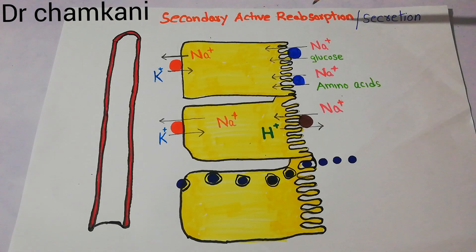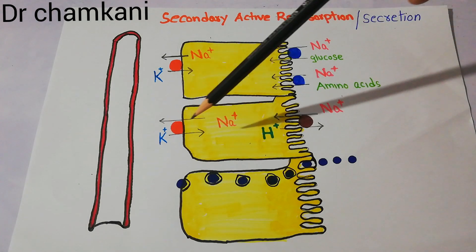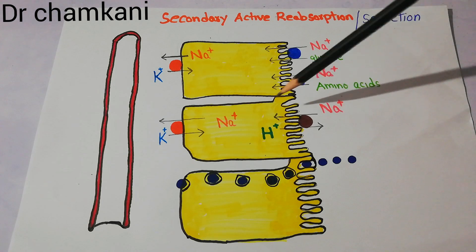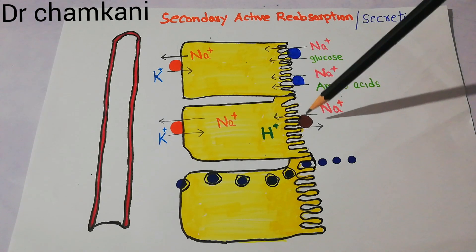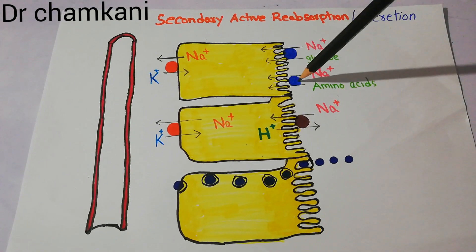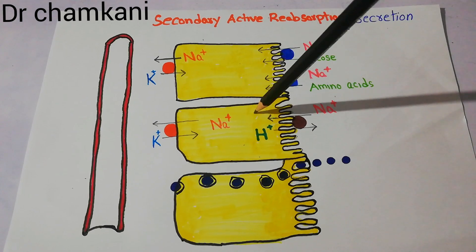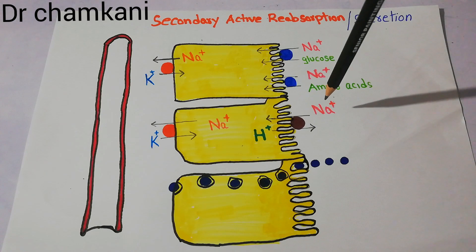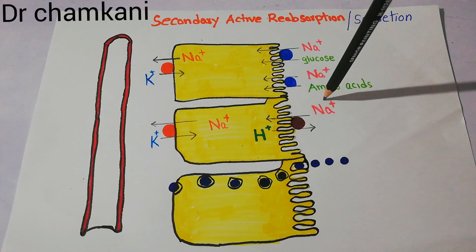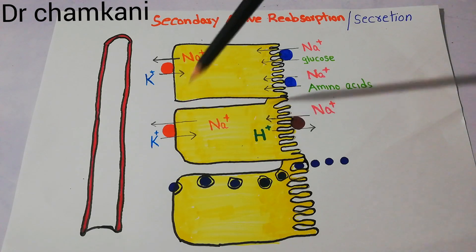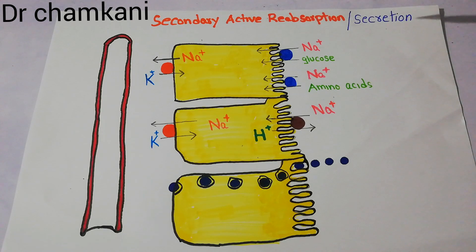The sodium-potassium pump continuously throws sodium out, creating a sodium deficiency inside the cell. To fill this deficiency, sodium from the lumen enters through a counter-transport carrier protein. Unlike co-transport carriers that move both substances in the same direction, the counter-transport carrier takes sodium inside while simultaneously pushing hydrogen outside — because sodium and hydrogen move in opposite directions. This is why the process is called secondary active secretion.